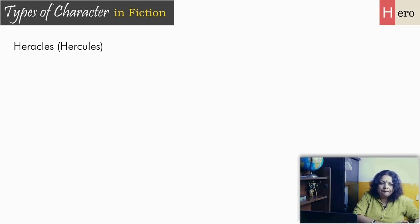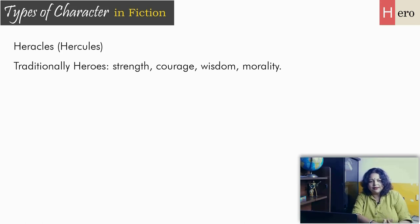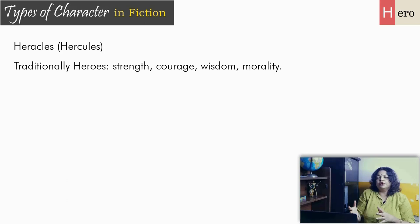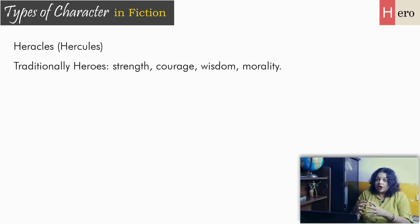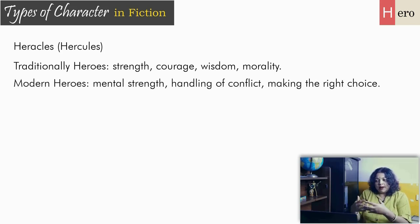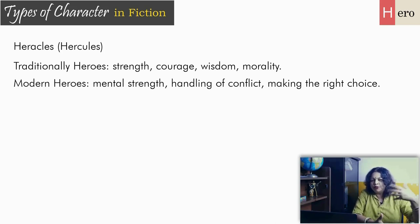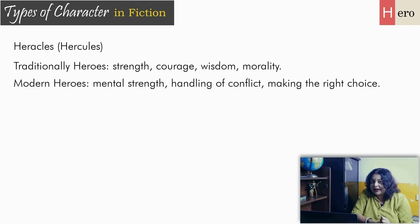Traditionally, archetypal heroes are based on the idea of strength, courage, and wisdom — those are the things we associate with Hercules. The novel, being a fairly modern Victorian genre, sees a shift from physical strength to mental strength and the handling of conflict. The point about being a hero has become associated with making choices, not just having physical strength. So heroes in modern, post-modern, and Victorian fiction may or may not possess physical strength, but they certainly exercise the right kind of choice.